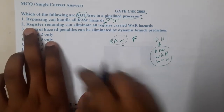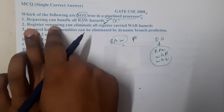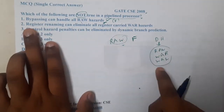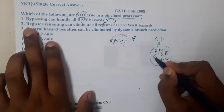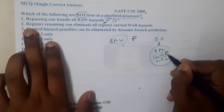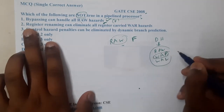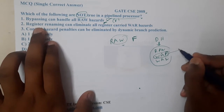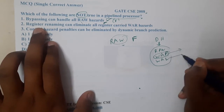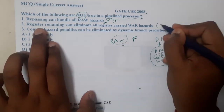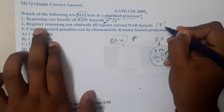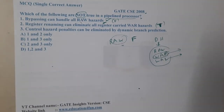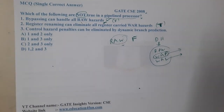Option B states that register renaming can eliminate all register-carrying WAR hazards. Since register renaming can resolve both write after read and write after write, this option is true — meaning it is not one of the false statements we are looking for.